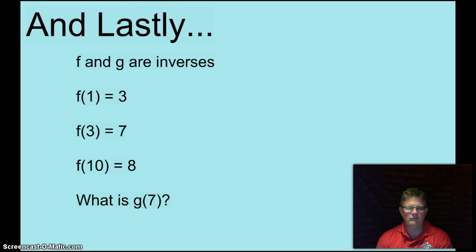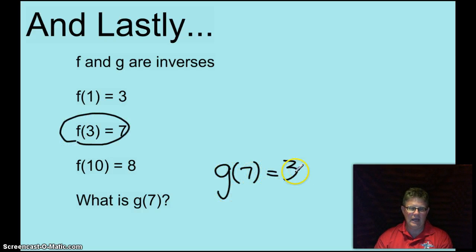And lastly one of my favorite concepts about inverses. F and G are inverses. F of 1 is 3, F of 3 is 7, F of 10 is 8. Please tell me what G of 7 is. Remembering that the domain and range of those inverse functions are switched, that's right G of 7 is 3 since F of 3 was 7, G of 7 had to equal 3.